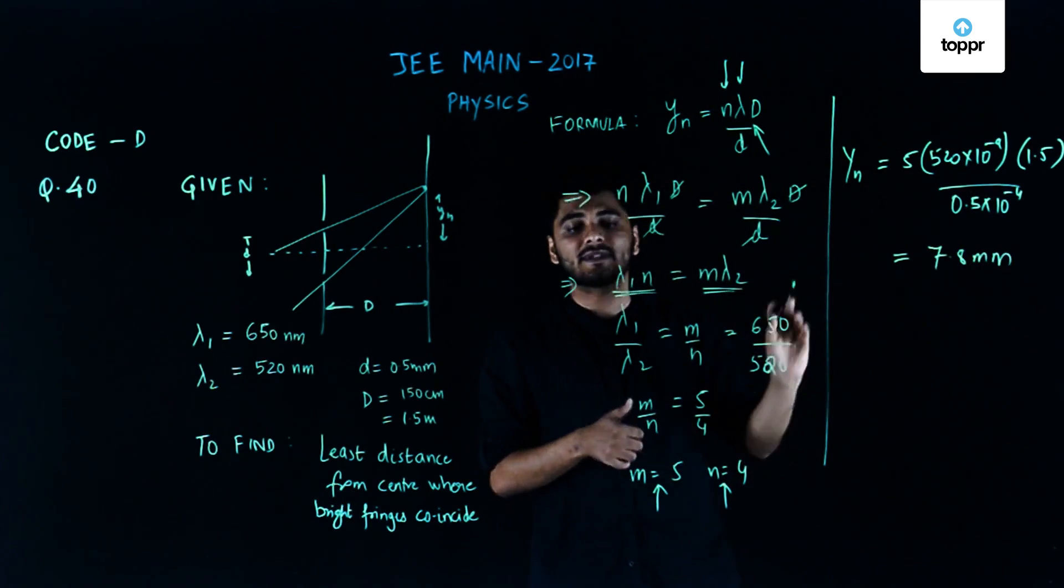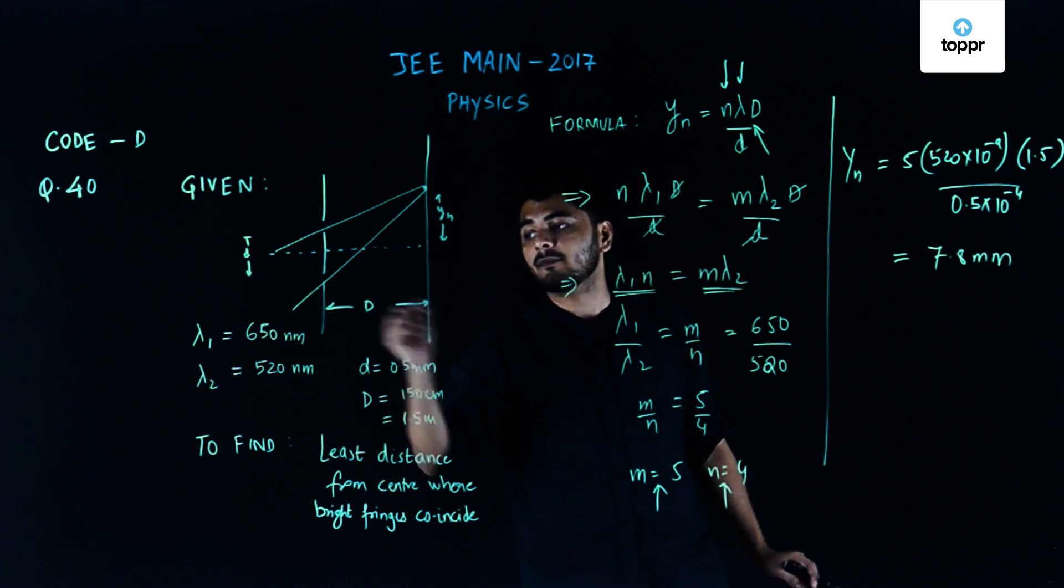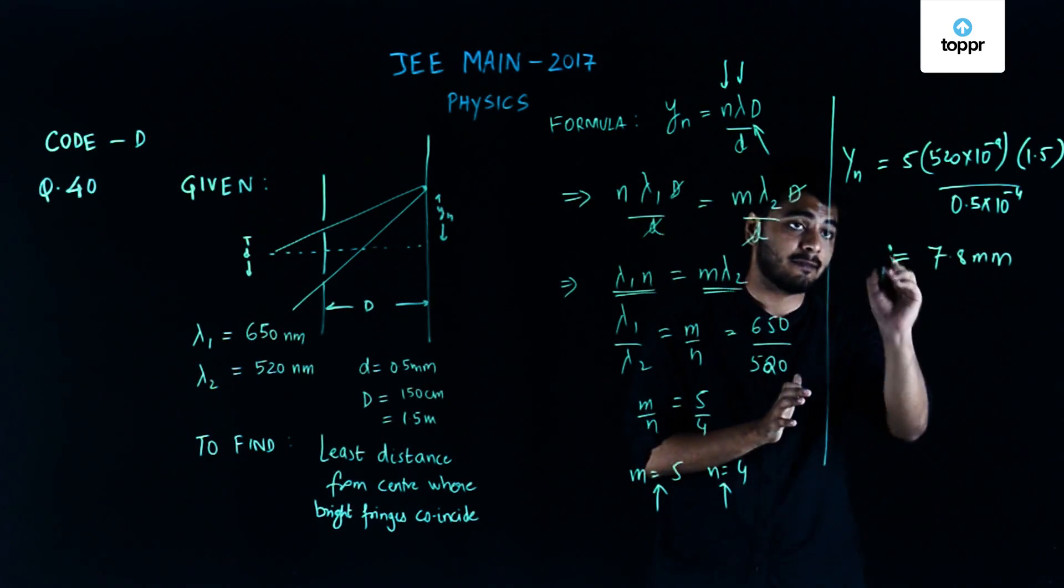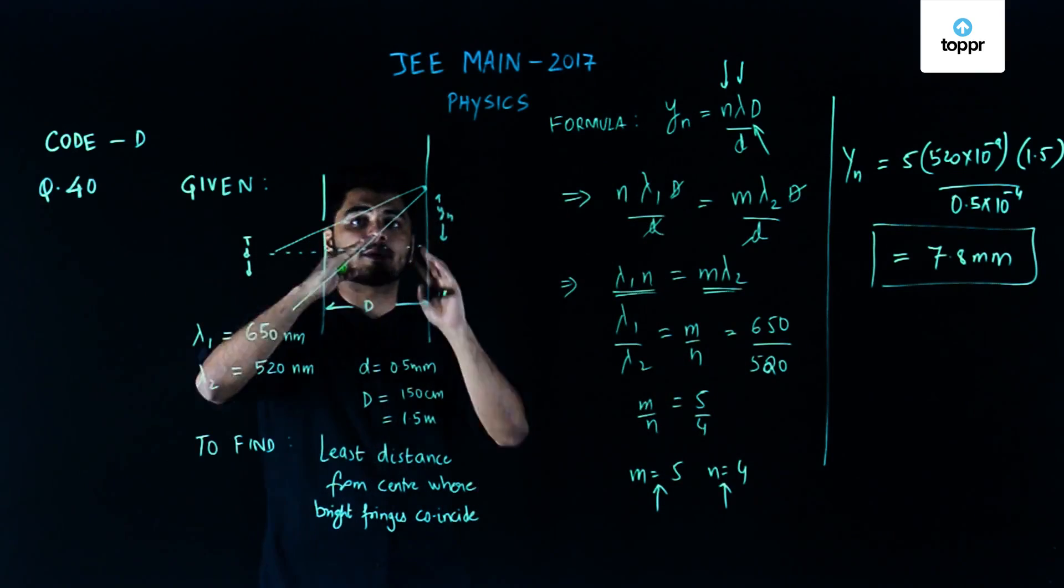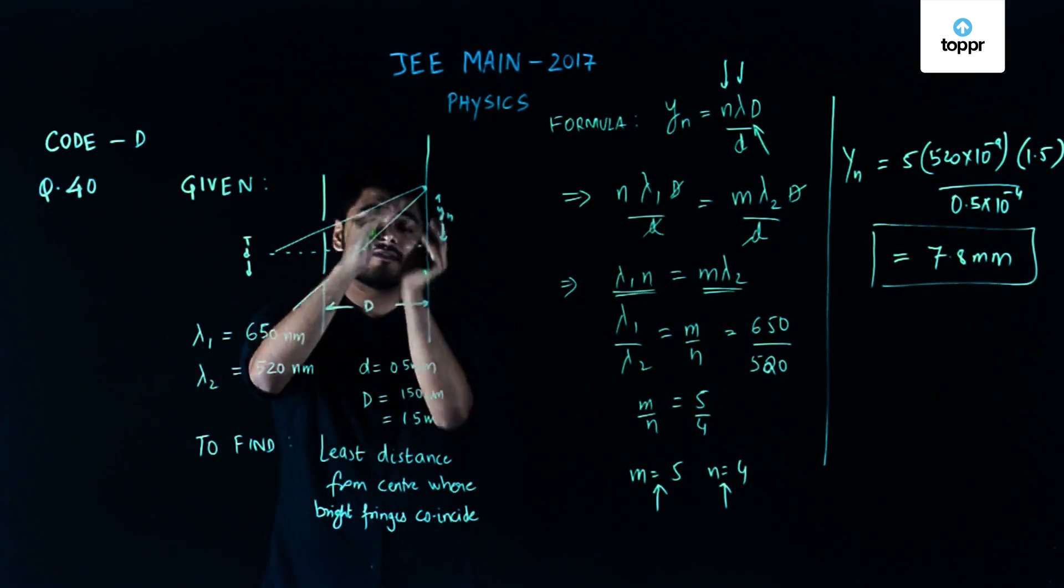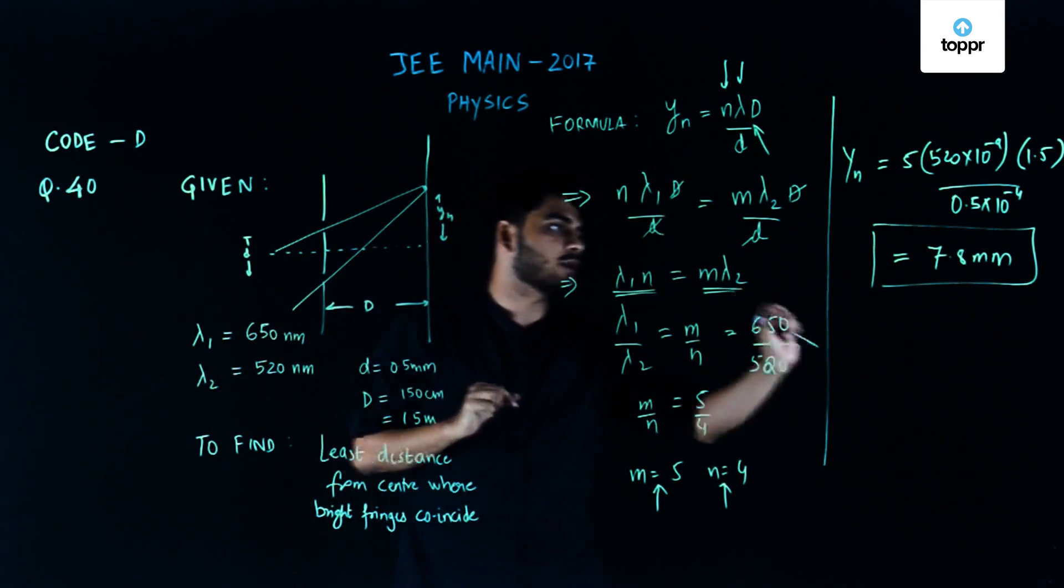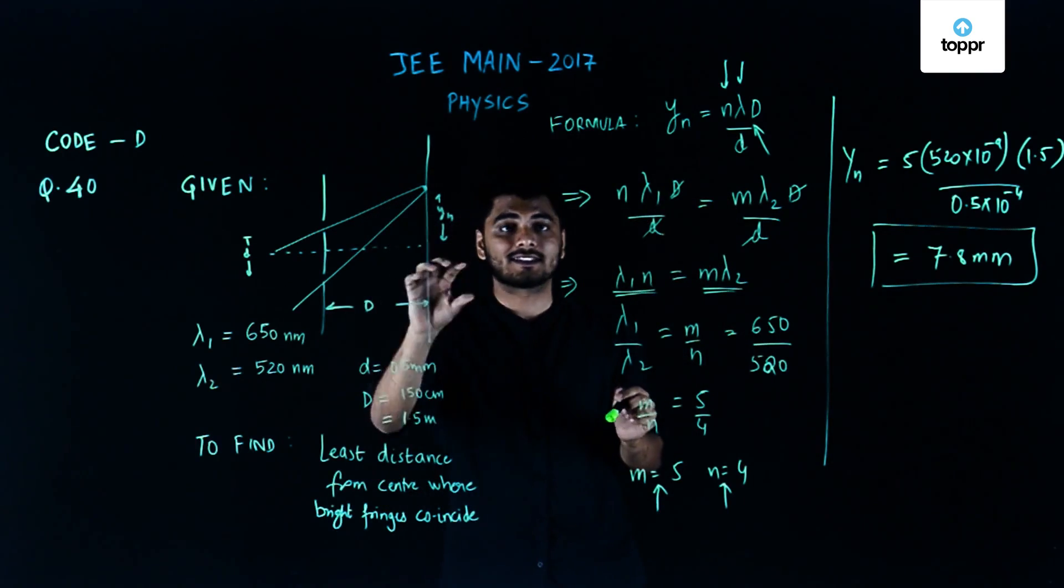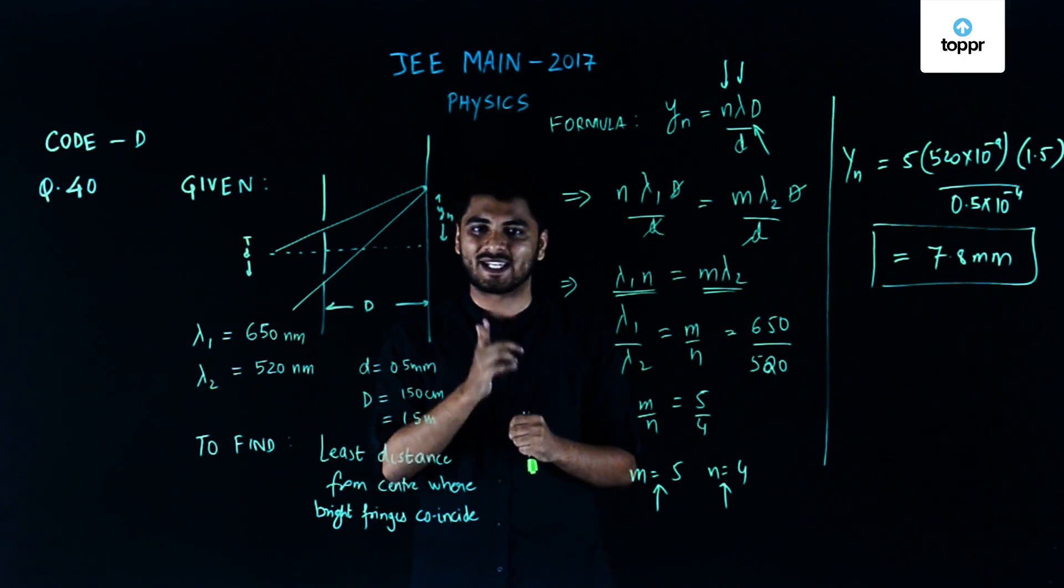Please note I could have solved the same thing by using n equals 4 and lambda equals 650 nanometers and I would have got the same answer. So the minimum distance at which after the central maxima these two interfere constructively to form a maxima is 7.8 mm. I hope you were able to understand this question and the solution. If you like our videos please subscribe to our channel and hang on because we'll be uploading more video solutions very soon.